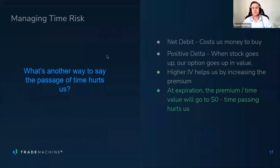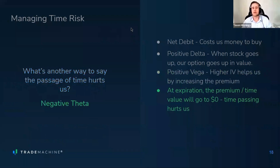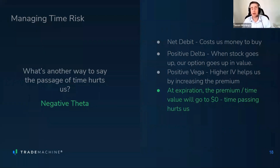The passage of time is going to hurt us when you're long options — in this case, just long a call. The Greek that describes how time affects your position is theta. If you're long options overall, then as time passes, you are losing premium. That's why theta shows as negative by default, because as time moves forward, the value of the option goes down. Positive theta would be if you've sold options — then every day that passes, you're able to buy the option back at less, so your overall position is going up as time passes.